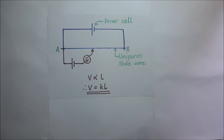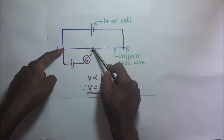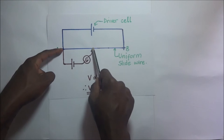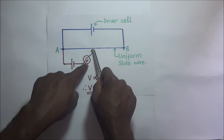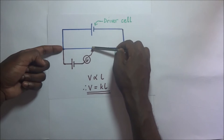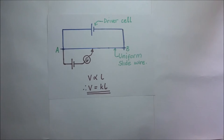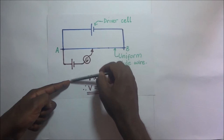Now how a potentiometer works is that an unknown potential difference is connected across the secondary circuit. When this unknown potential difference is connected across the secondary circuit, this sliding jockey is tapped along the slide wire until a point whereby this galvanometer shows no deflection. When that point is achieved and the galvanometer shows no deflection, it means that the potential difference across that portion of the balance length is equivalent to the potential difference across the unknown potential difference connected in the secondary circuit.